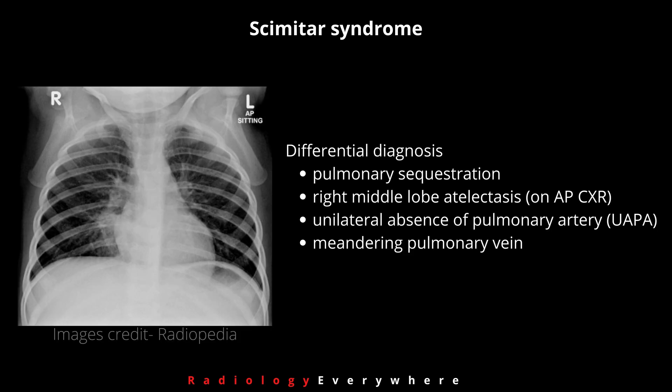When considering the differential diagnosis of Scimitar syndrome, you can consider pulmonary sequestration, right middle lobe atelectasis on AP chest X-ray, unilateral absence of pulmonary artery, or meandering pulmonary vein.